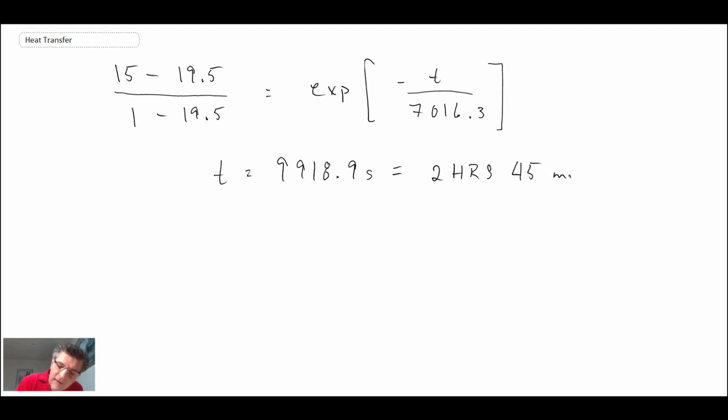Solving the equation for time gives approximately 10,000 seconds, which converts to 2 hours 45 minutes. That's how long it takes for the can of pop to warm from 1°C to 15°C in a room at 19.5°C—quite a bit of time.